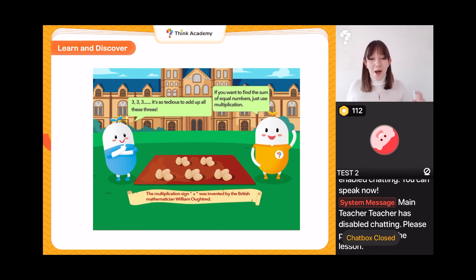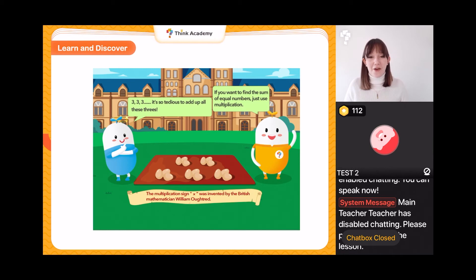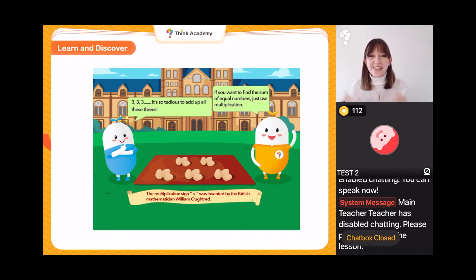Pip has saved up all of his Easter eggs — he hasn't eaten a single one. He's got them all together and now he wants to know how many Easter eggs he got altogether. He's put them into groups of three because he quite likes counting in threes, but he's got quite a lot.